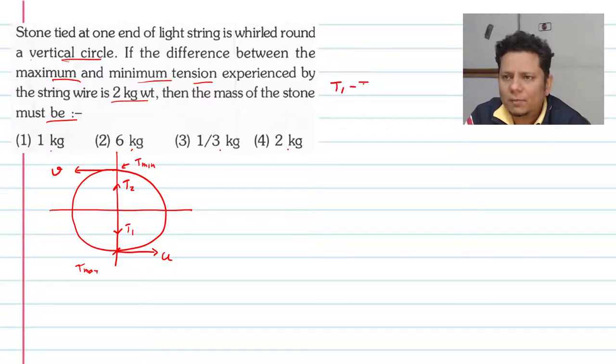T1 minus T2 is equal to 2g. Now, 2 kg weight needs to be converted to force in Newtons. This will be equal to m*u²/r plus mg at the lowest point, minus m*v²/r minus mg at the highest point, and this is equal to 2g.